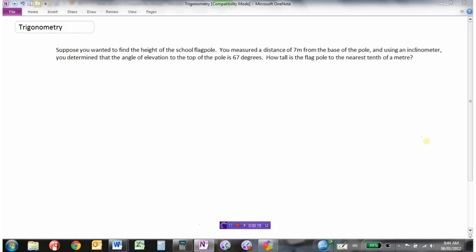Here's a situation: suppose you wanted to find the height of the school flagpole. What you could do is measure a distance of seven meters from the base of the pole, and then using an inclinometer, which is a little device that you sight to the top of things and tells you the angle of elevation, suppose you determine that the angle of elevation to the top of the pole is 67 degrees. With trigonometry we could find the height of the flagpole without going up there and measuring it.